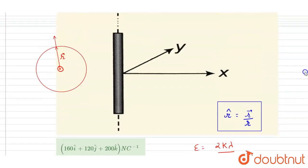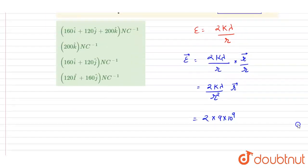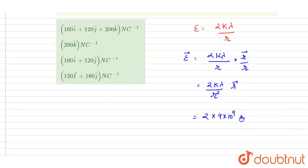So now we just need to put the value. We know that k here is 9×10⁹, lambda is 10/9 nanocoulomb per meter.